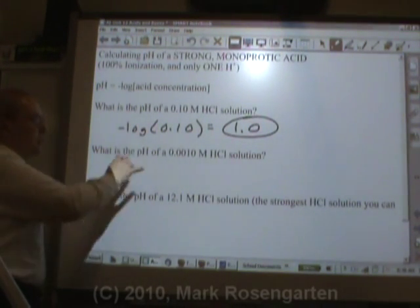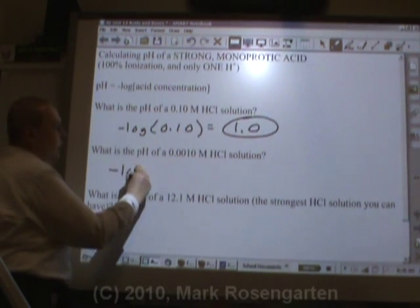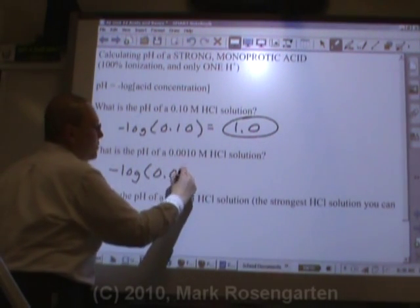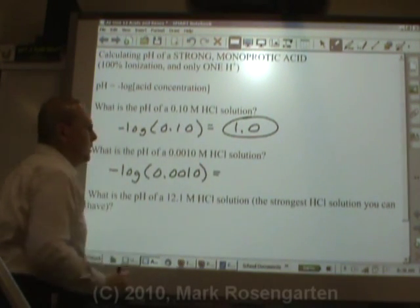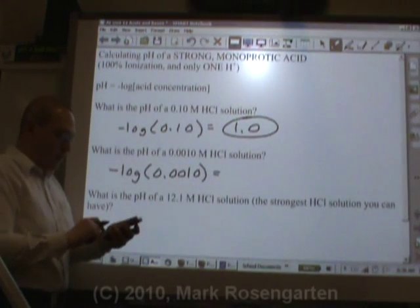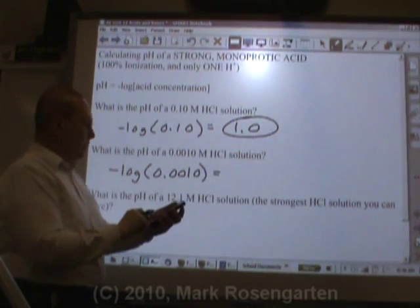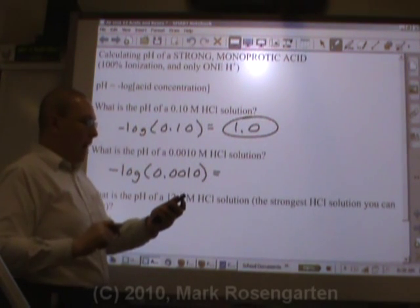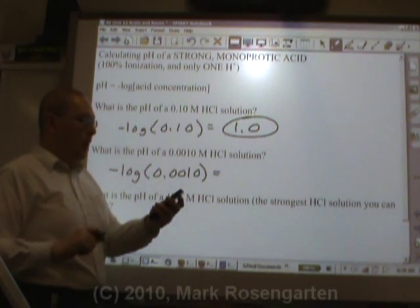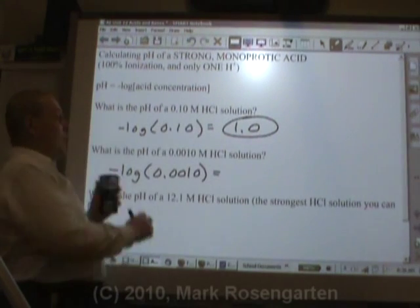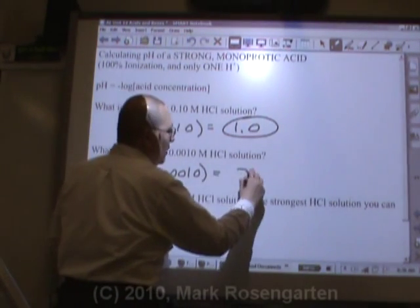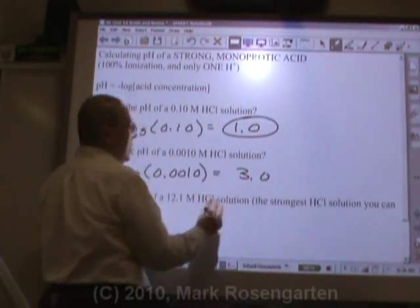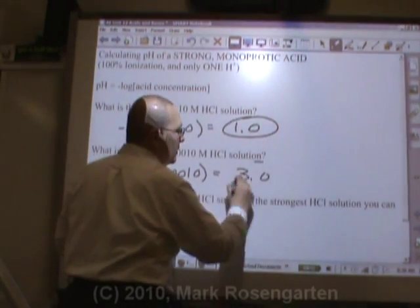To find the pH of this solution: negative log of 0.0010. Log of 0.001 gives me a log of negative 3, so the negative log would be positive 3.0 — two significant figures.